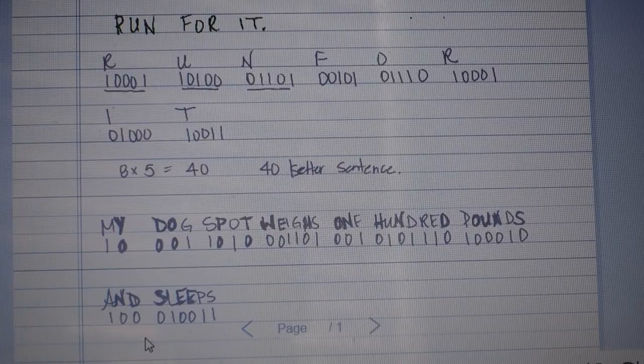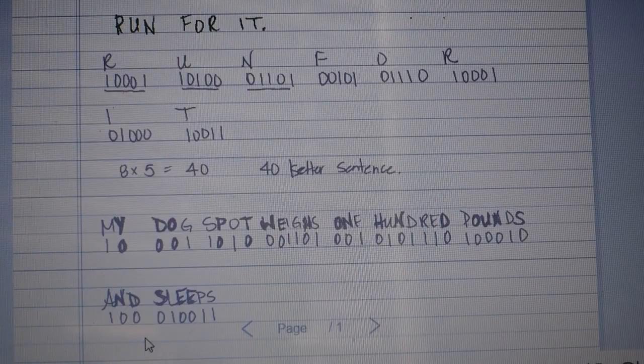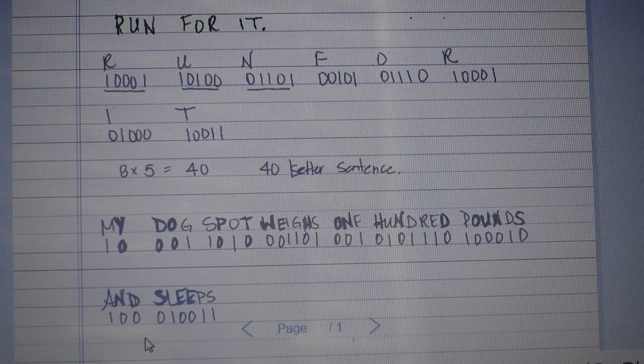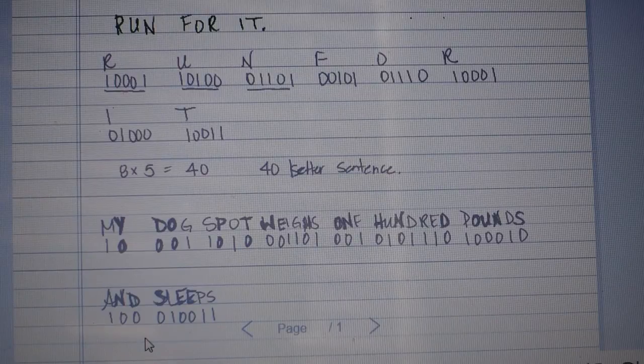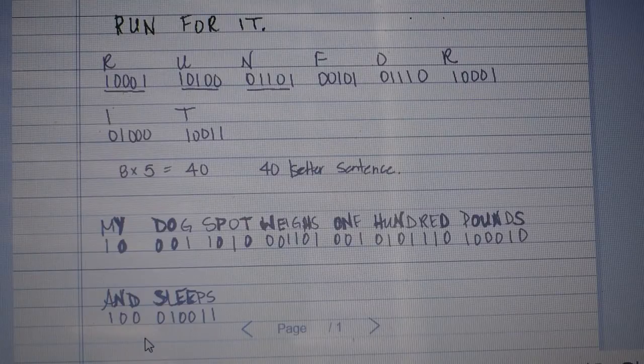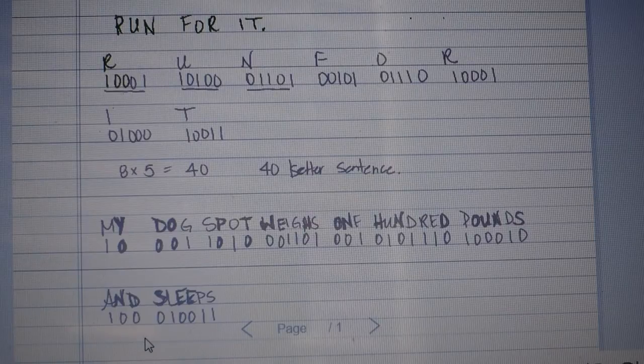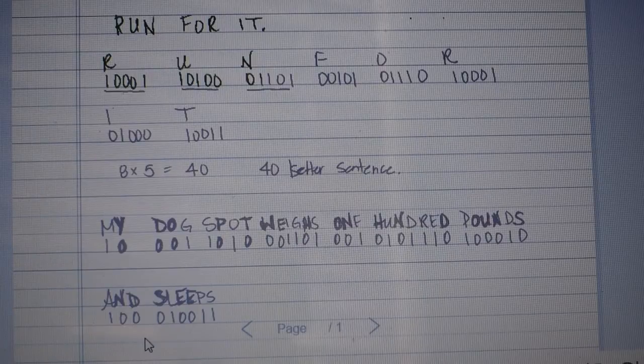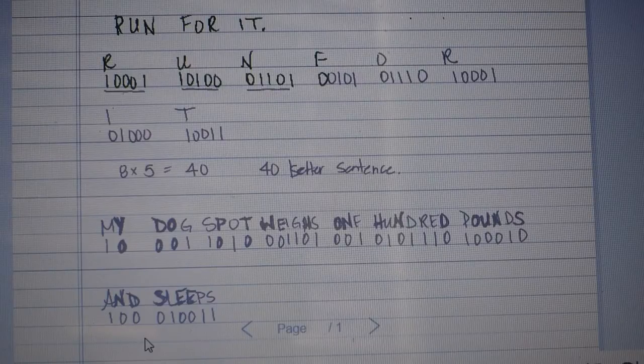So what I'll start doing is taking each letter and encoding it according to binary code. R is going to be 10001, U is 10100, and N is 01101.